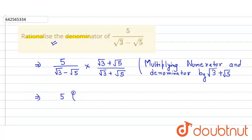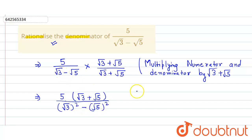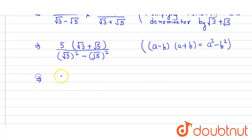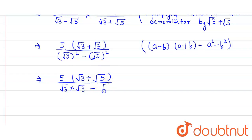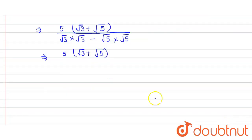So that will be equal to 5 into root 3 plus root 5, and in the denominator it will be root 3 squared minus root 5 squared. The reason is we have used the algebraic identity: a minus b into a plus b equals a squared minus b squared. So root 3 into root 3 equals 3, and similarly root 5 into root 5 equals 5.